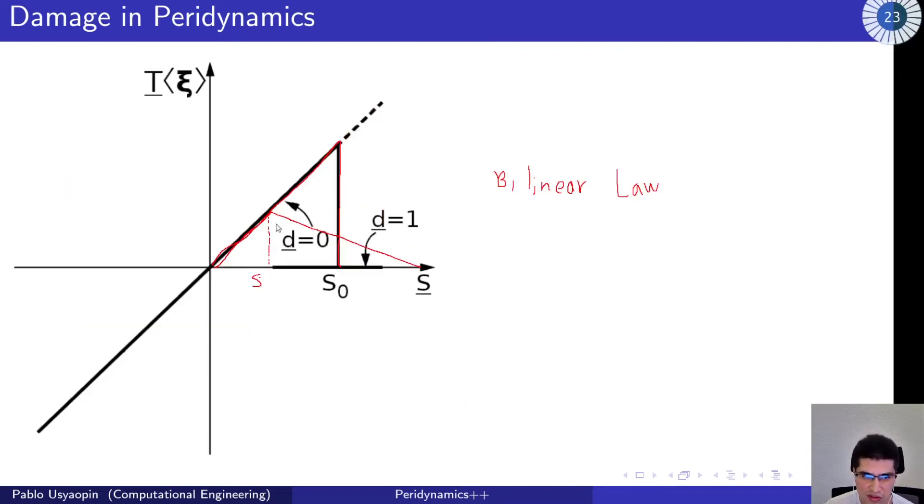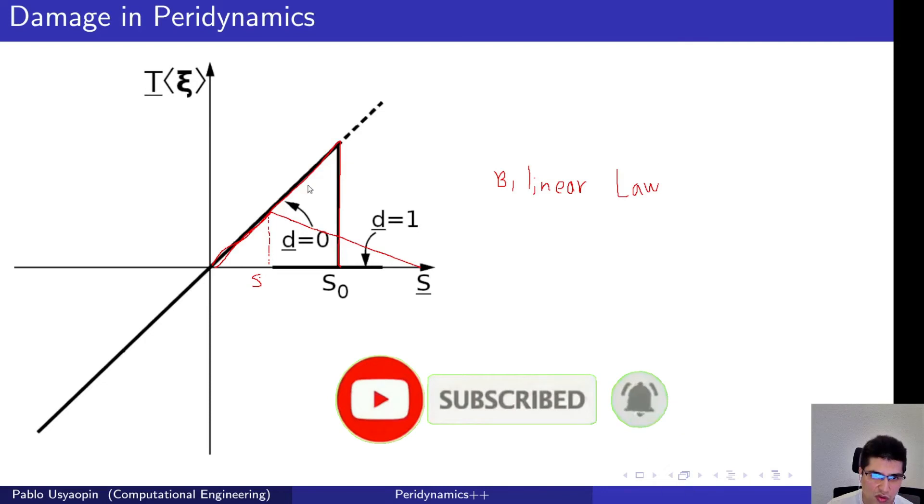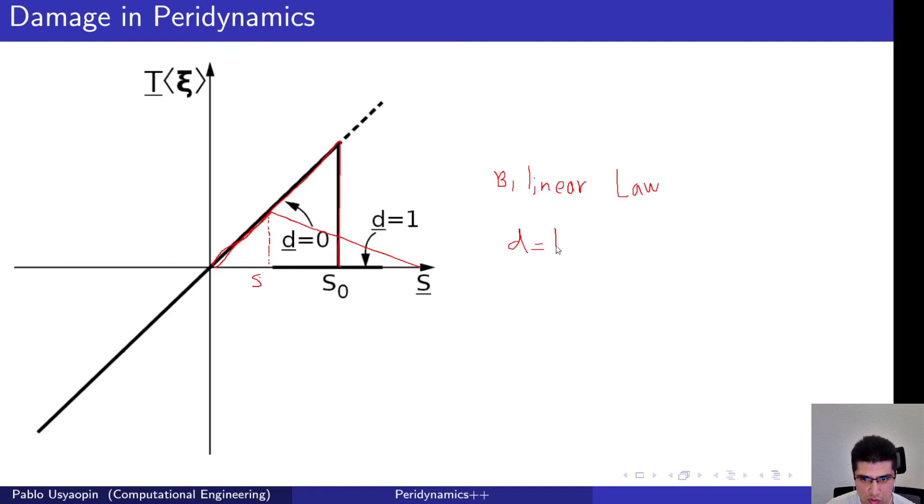The important part here is that in this graph, remember that we are looking at how the force behaves. So if we used the original configuration, the damage would be either equal to one or equal to zero, because damage would be zero here and then would be one from here. But in this case you would have to define here...